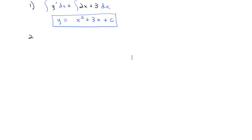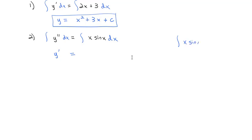Let's try one that's a little bit more involved. Let's say y double prime is equal to x times the sine of x. Well, to get rid of a double prime, we're going to have to integrate twice. We can do this because there are no y's on the other side of the equation. So when I take the integral dx, the antiderivative of y double prime is just a single prime, and we need to integrate x sine of x dx.